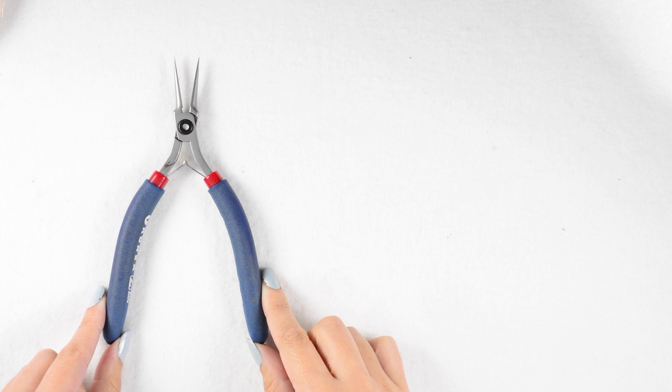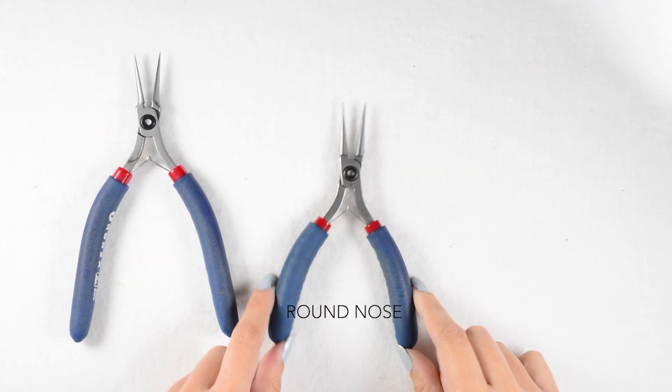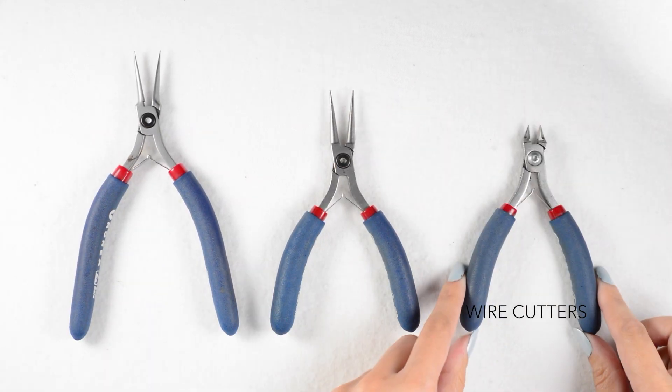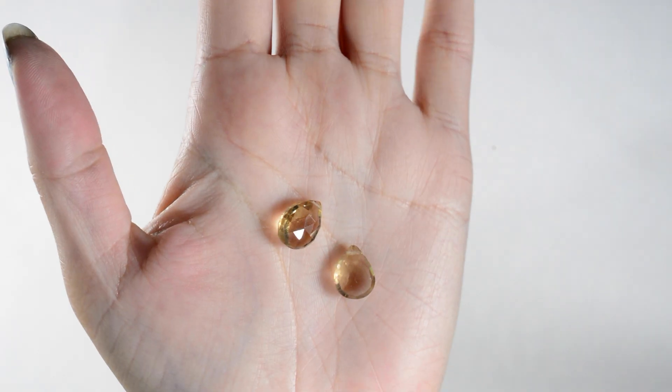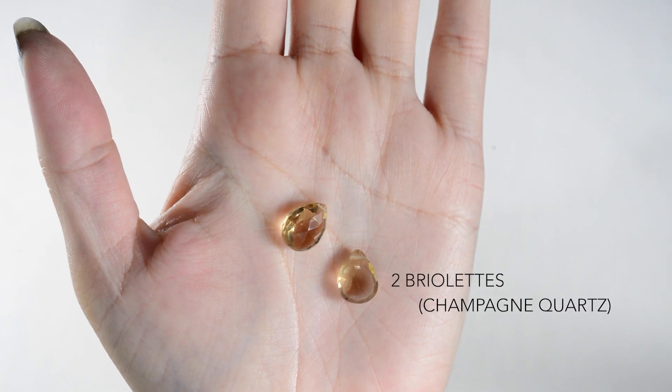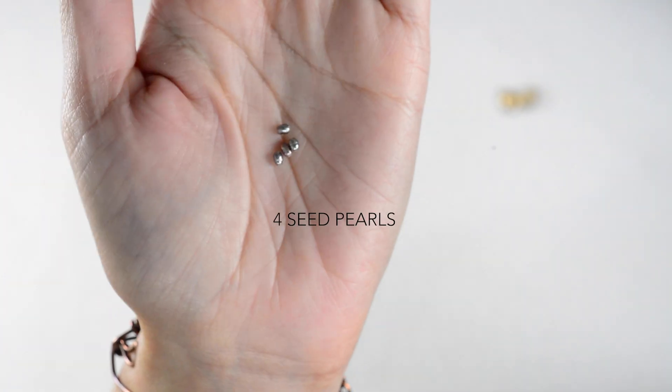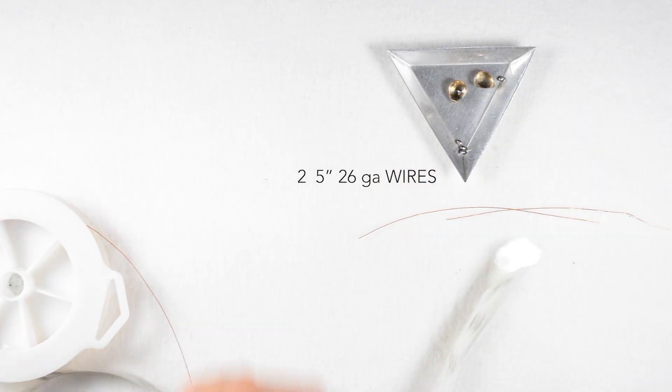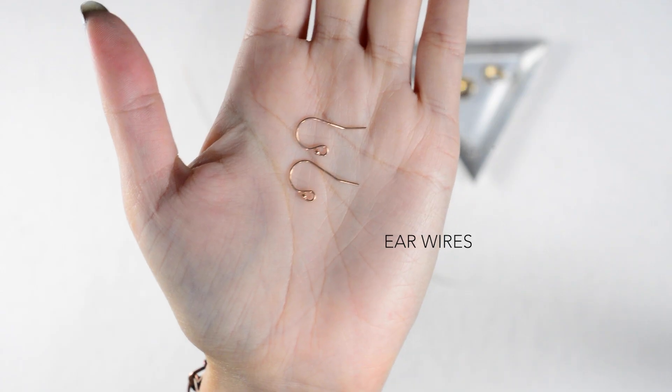The tools we'll be using today are our needle nose pliers, our round nose pliers, and our wire cutters. For supplies I'll be working with two of these champagne quartz briolettes, four seed pearls, two 5 inch segments of 26 gauge wire, and my ear wires.